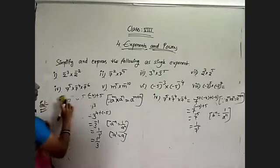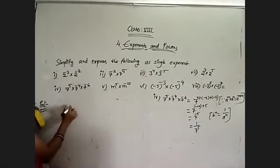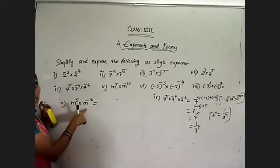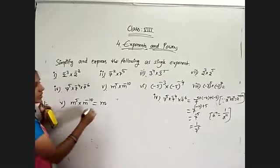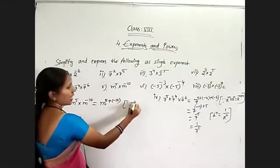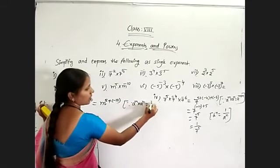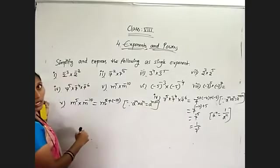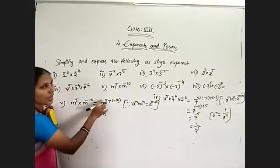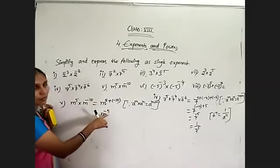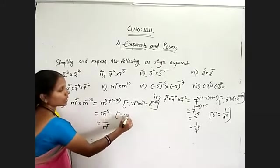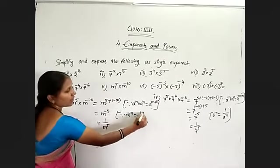Fifth problem: m power 5 into m power minus 10. Both have same base m, so add exponents using a power m into a power n equals a to the power of m plus n. That is m to the power of 5 plus minus 10 equals m to the power of minus 5. We got a negative power again, so simplify: 1 by m to the power of 5, using a power minus n equals 1 by a power n.